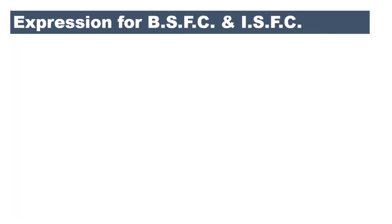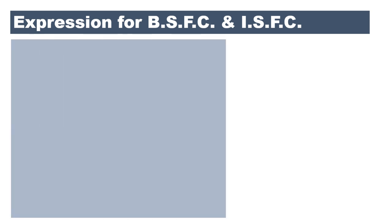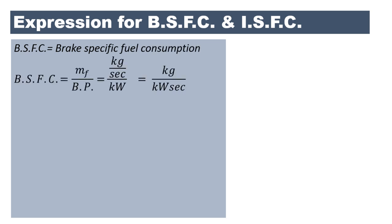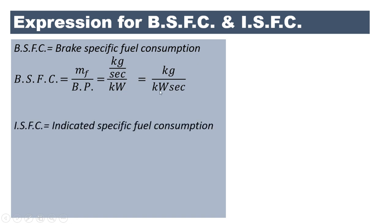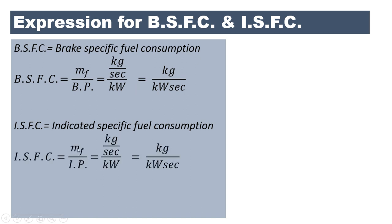Brake specific fuel consumption (BSFC) is the ratio of mass of fuel to brake power: BSFC = mf / BP. Here mf is in kg per second and BP is in kilowatt, so the unit is kg per kilowatt·second — meaning the fuel required in one second to develop one kilowatt of brake power. This is commonly expressed as kg per kilowatt·hour by multiplying by 3600. Similarly, indicated specific fuel consumption (ISFC) uses indicated power instead of brake power, also expressed in kg/(kW·s) or kg/(kW·h).